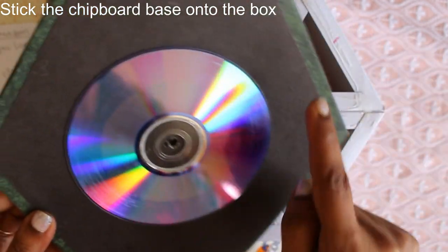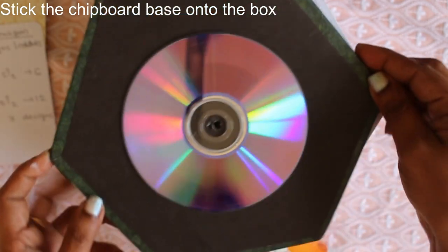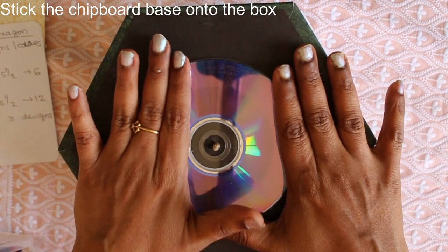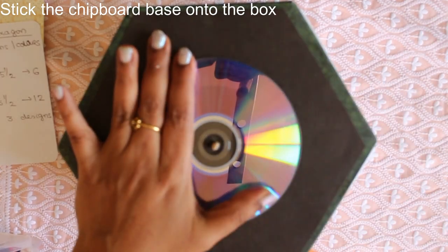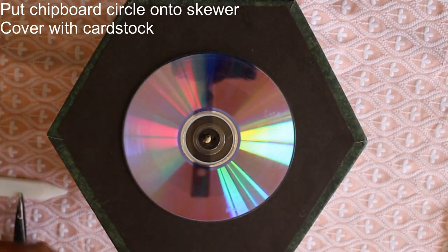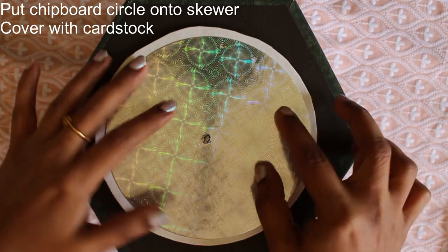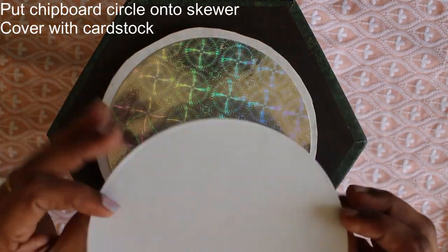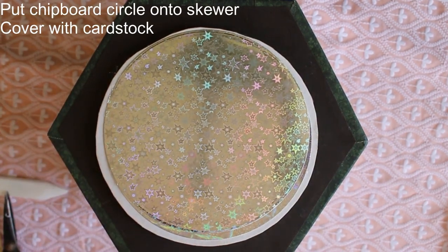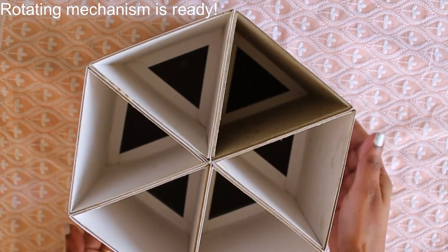Since you have traced it out you need to be sure you are sticking it in the correct place otherwise it will look quite uneven. So hold it in place firmly. So that is the skewer going through the hexagonal chipboard and coming out through your circular chipboard. To finish it off add a piece of cardstock. Now flip it and your rotating mechanism is ready. Wasn't that easy?